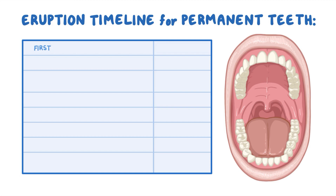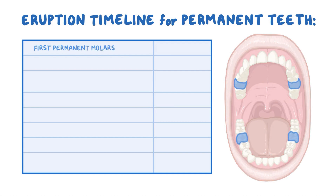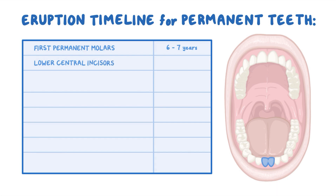The first permanent teeth to come in are the permanent molars, which usually appear around 6 to 7 years of age. The permanent first molars erupt distal to the primary second molars, thus no primary tooth exfoliates to make room for them. The next to erupt are the lower central incisors at around 6 to 7 years. The eruption of these and all subsequent permanent teeth, except permanent molars, is preceded by the exfoliation of an overlying primary tooth.